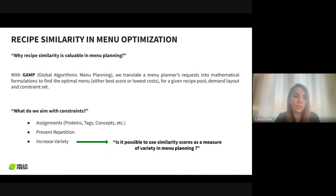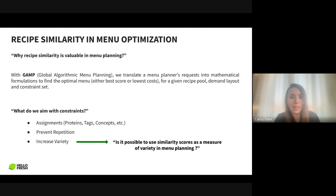If you're familiar with operations research and mixed integer programming, you may know that satisfying constraints is the most crucial part for making our stakeholders happy and ensuring the optimal solution is adopted. Our stakeholders want to assign proteins, tags, and concepts into the menu regarding their recipes. They have lots of attributes — the same ones Samet used in the similarity tool. We want to prevent repetition and increase variety, and these constraints have a huge number and impact on menu optimization.